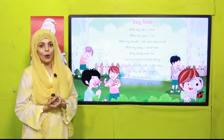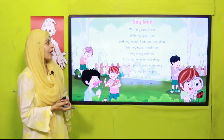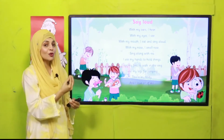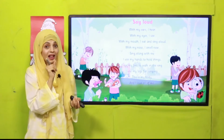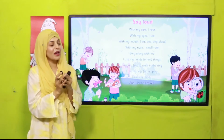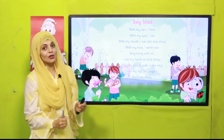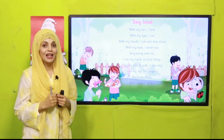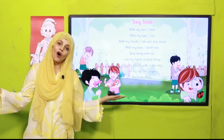Now I will sing a poem for you. Everybody stand up and touch the body part I name in the poem! With my ears I hear, with my eyes I see, with my mouth I eat, I sing aloud, with my nose I smell a rose. Sing along with me! I use my hand to hold things, I use my feet to walk in the ring, I use my legs for jumping — this is my body and I love all of me!